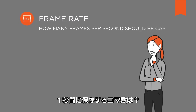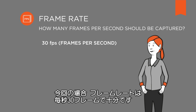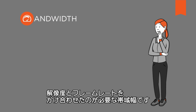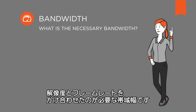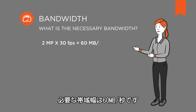How many frames per second should be captured? This is known as the camera's frame rate. 30 frames per second are more than enough in this scenario. The resolution and frame rate are simply multiplied to calculate the necessary bandwidth. At a resolution of 2 megapixels and 30 frames per second, we need a bandwidth of 60 megabytes per second.